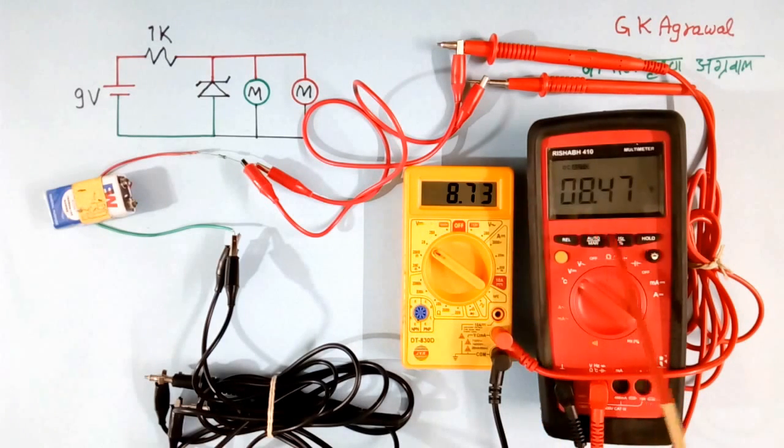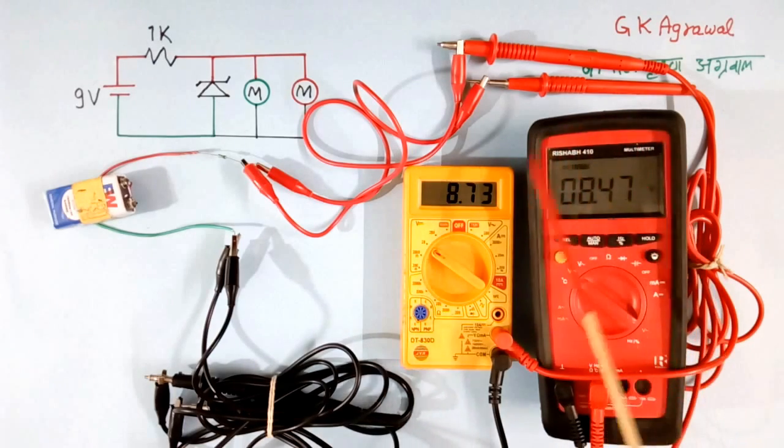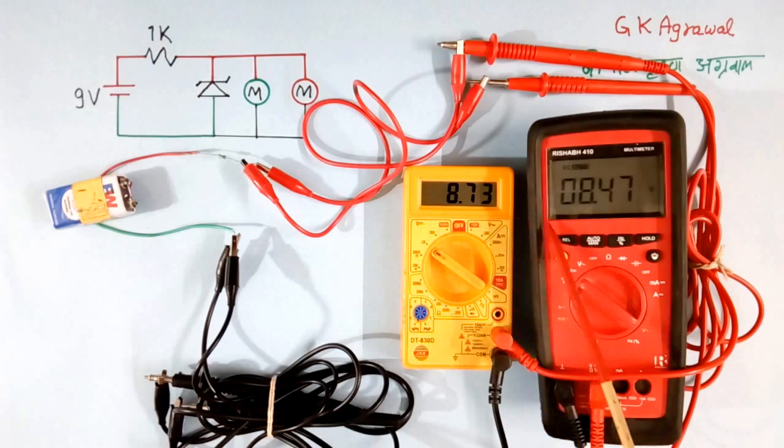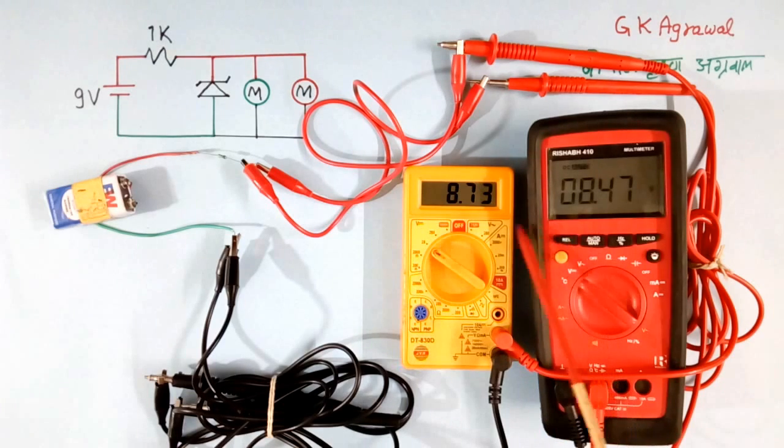This is because this multimeter is good quality. It is giving a more accurate value. This is giving a less accurate value. So the correct voltage is 8.47V, not this. That is what I wanted to show. If multimeter quality is good, you will get correct voltage, otherwise a little error will come.